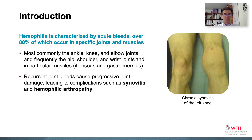From the musculoskeletal point of view, hemophilia is characterized by acute bleeds, over 80% of which occur in specific joints, most commonly the ankle, knee, and elbow joints, and frequently, but not with the greatest frequency, the hip, shoulder, and wrist joints.